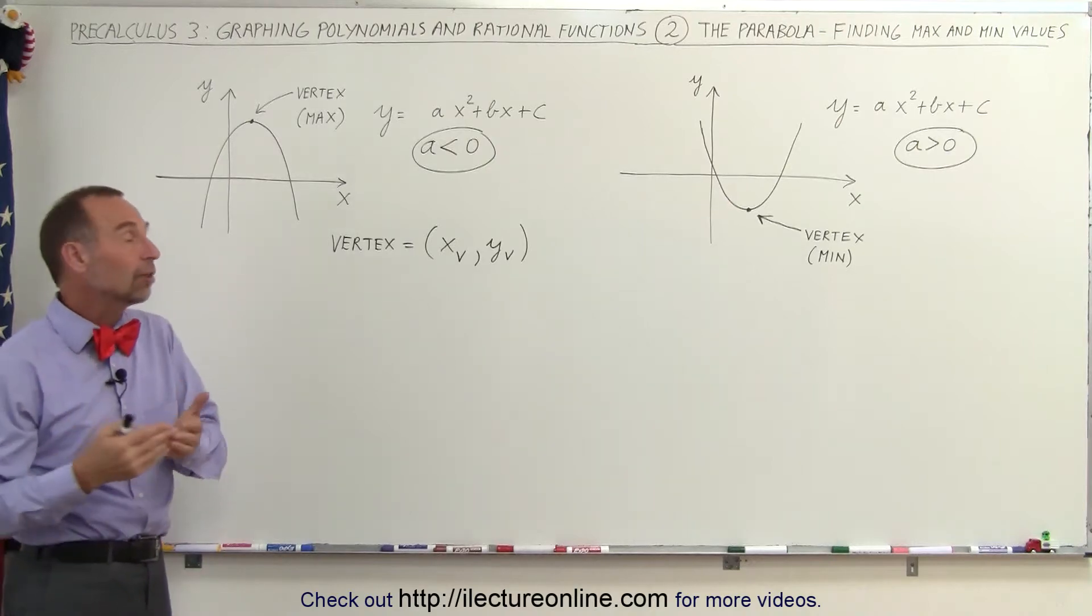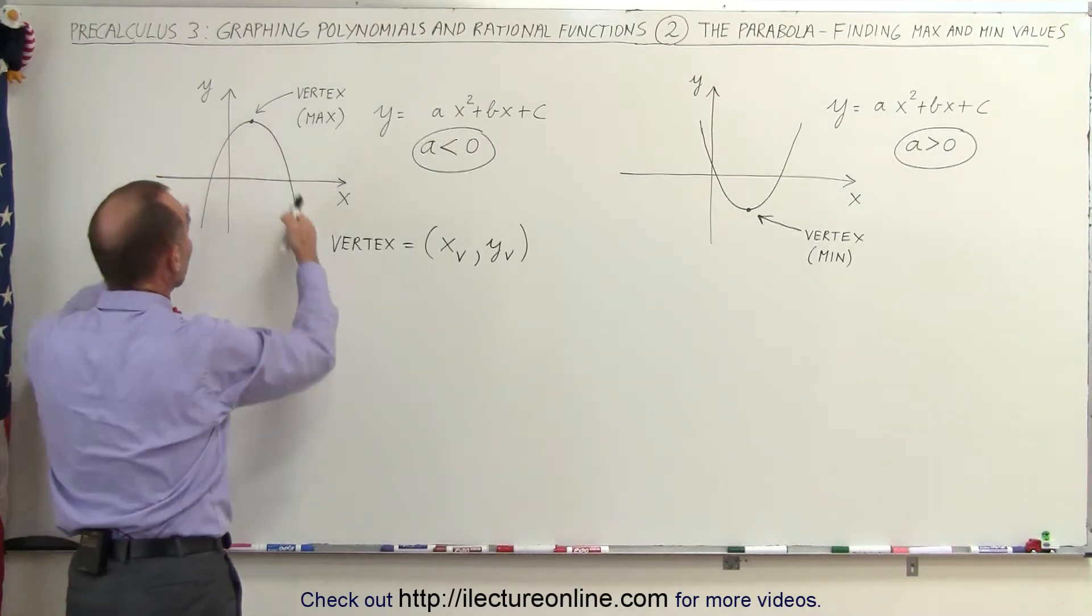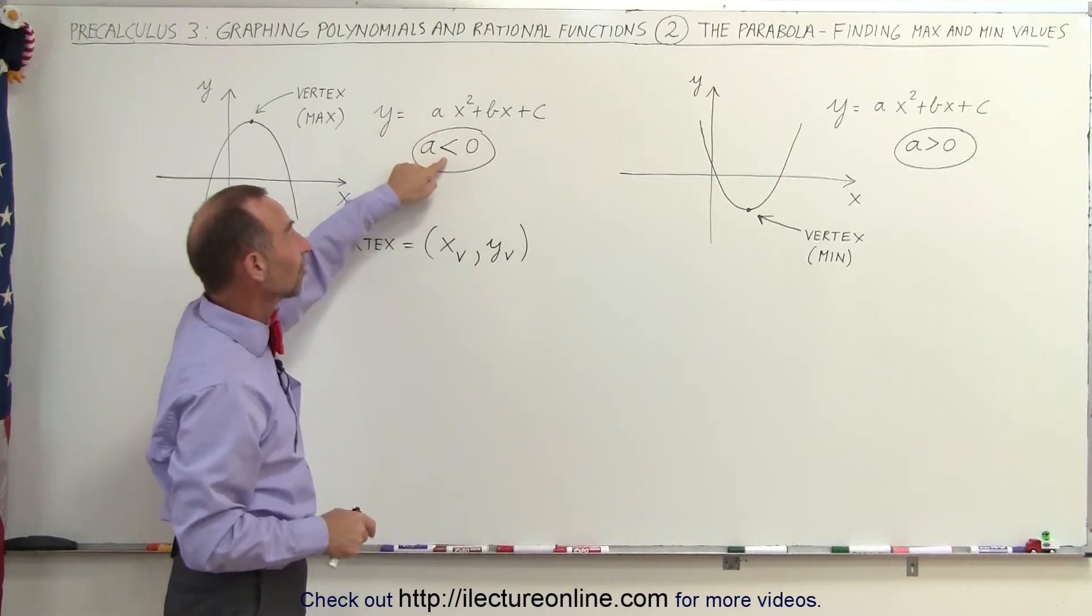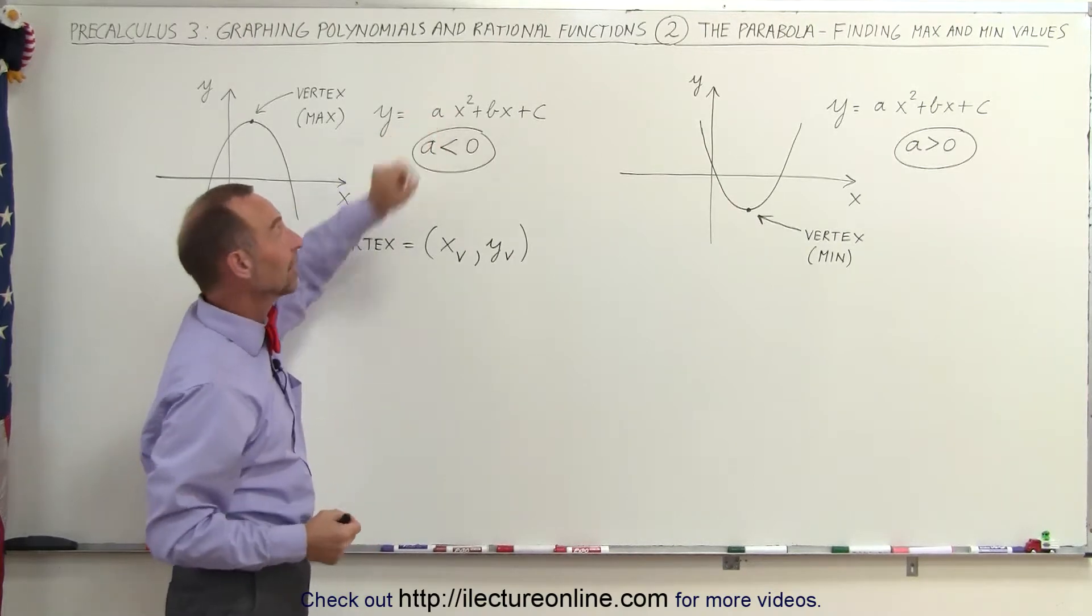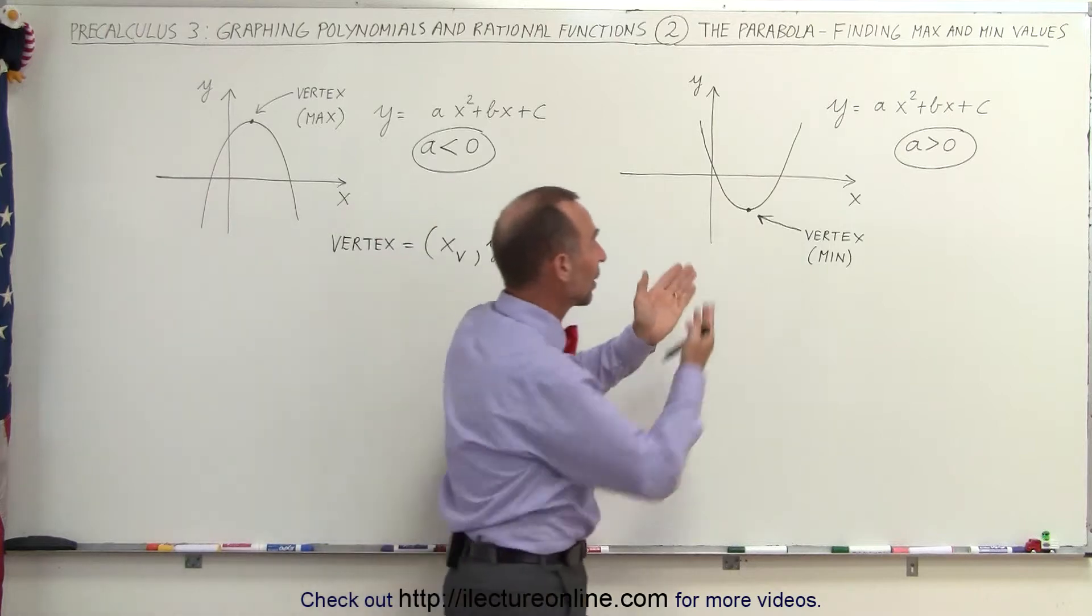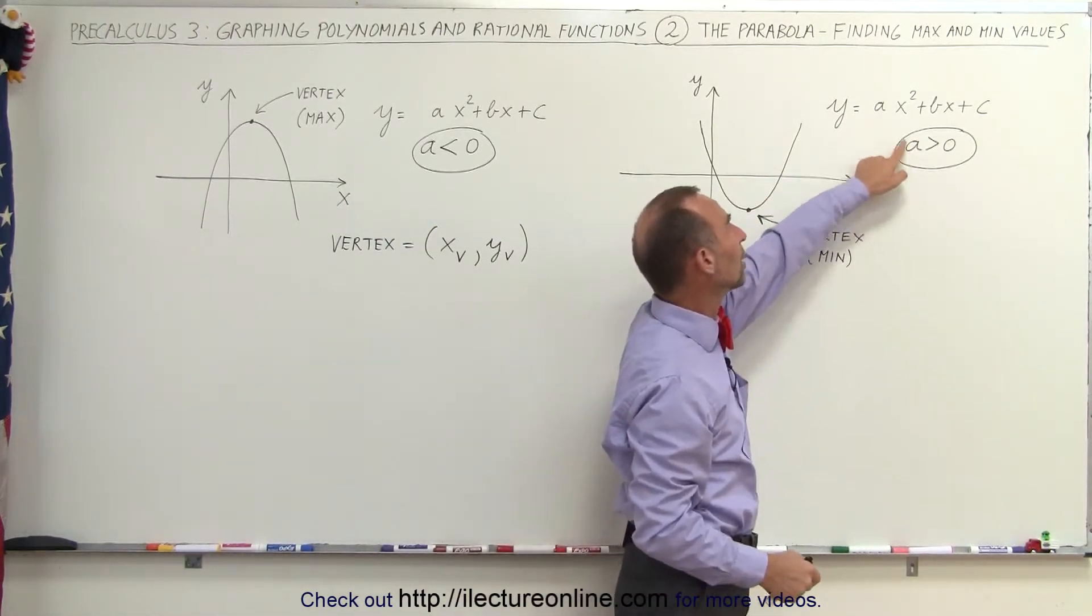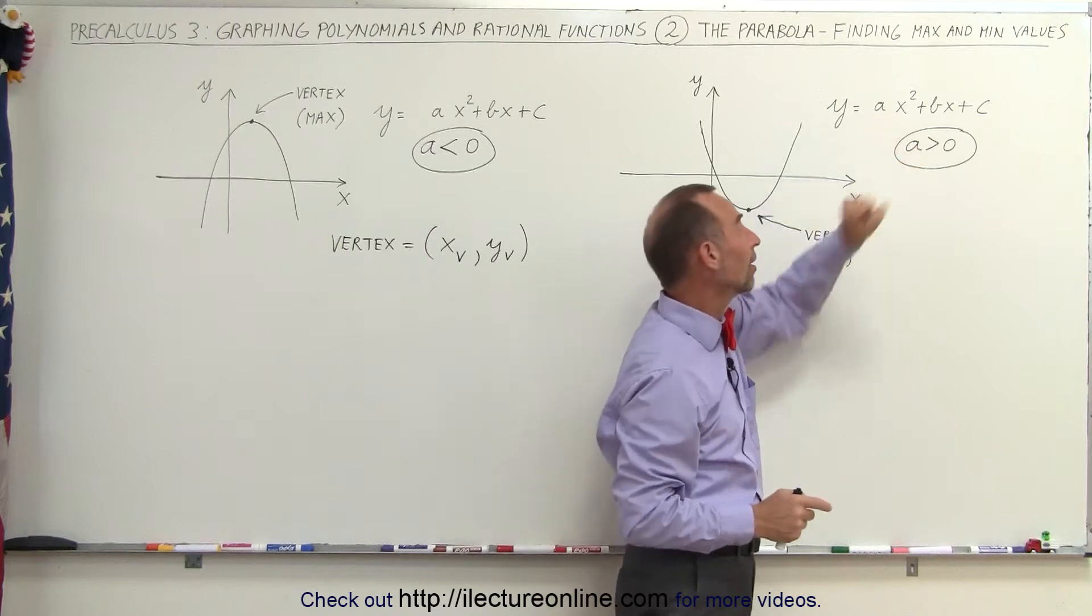And the qualifications for having a parabola that opens downward: the coefficient of the leading term is less than zero. So a here would have to be a negative value. And here if we expect the parabola to open upward so that we have a minimum value, that requires the coefficient of the leading term to be a positive value.